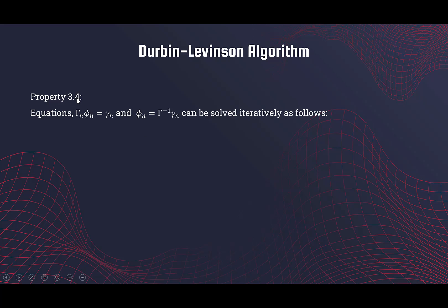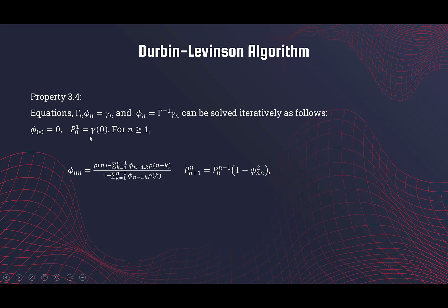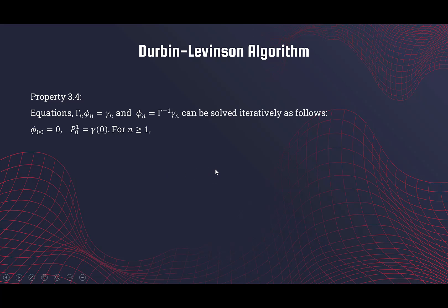The Durbin-Levinson algorithm is also listed as Property 3.4 in the textbook. The system of equations for the linear predictors can be solved iteratively as follows. We initialize phi_{0,0} = 0, and p_{0,1} is the initial prediction error. Then phi_{n,n} — which is the last coefficient in the linear predictor model — is calculated using a specific formula involving earlier phi values and the prediction error.